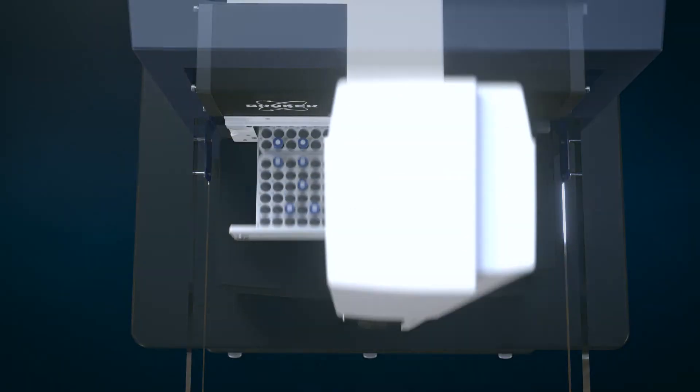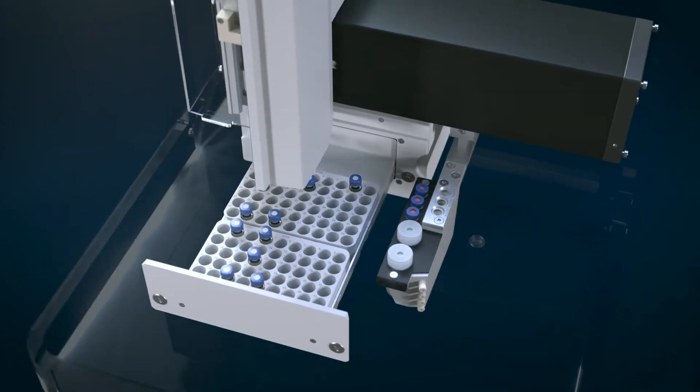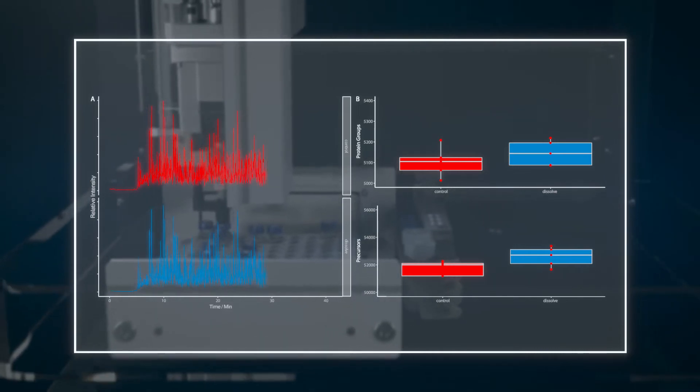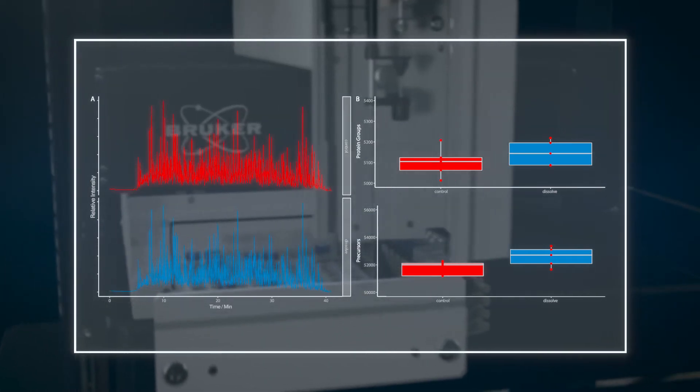The Nano ELUT2 allows you to dissolve, dilute, or derivatize your sample prior to injection and helps you gain confidence in your results.